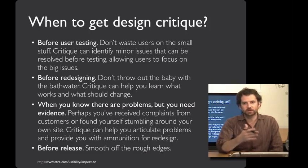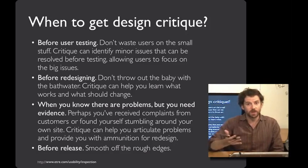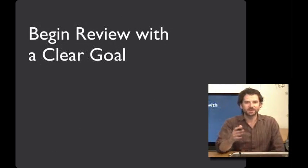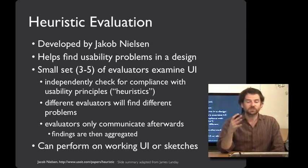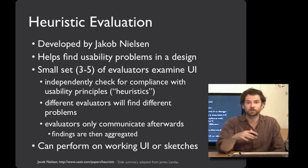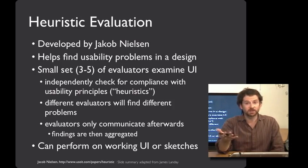Lastly, this kind of structured peer critique can be really valuable before releasing software, because it helps you do a final sanding of the entire design and smooth out any rough edges. As with most types of evaluation, it's usually helpful to begin with a clear goal, even if what you ultimately learn is completely unexpected. What we're going to talk about today is a particular technique called heuristic evaluation. Heuristic evaluation was created by Jacob Nielsen and colleagues about 20 years ago, and the goal is to be able to find usability problems in the design.